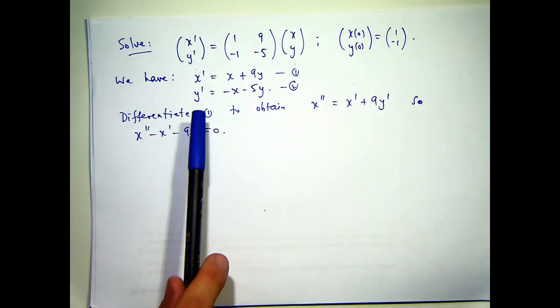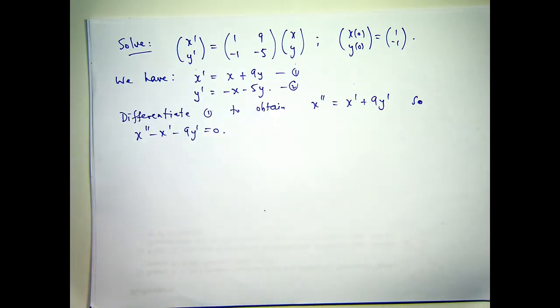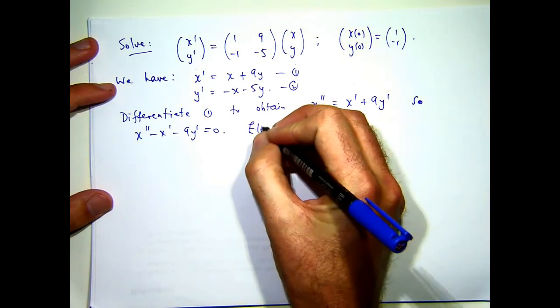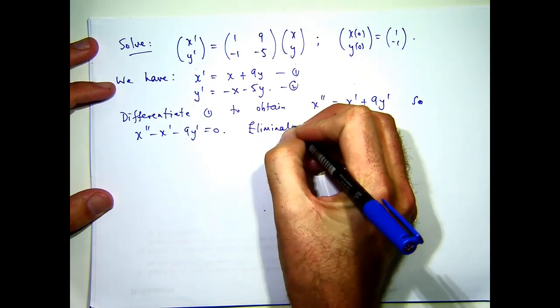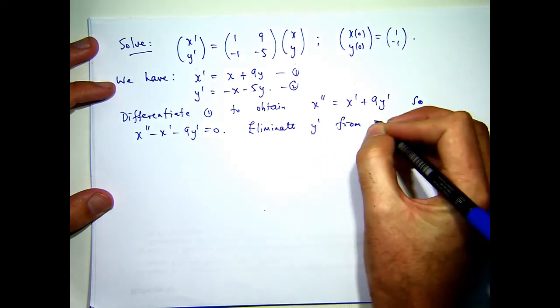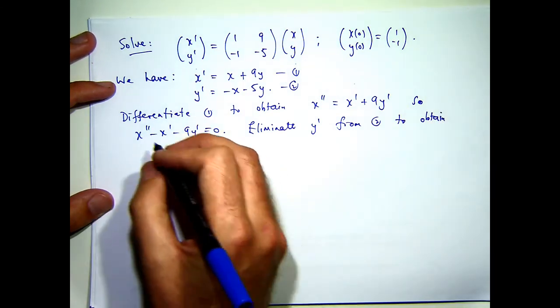So what I can do now is actually eliminate that y dash by using the second equation. Now, I still have a y in there, but I can manage that away from the first equation.